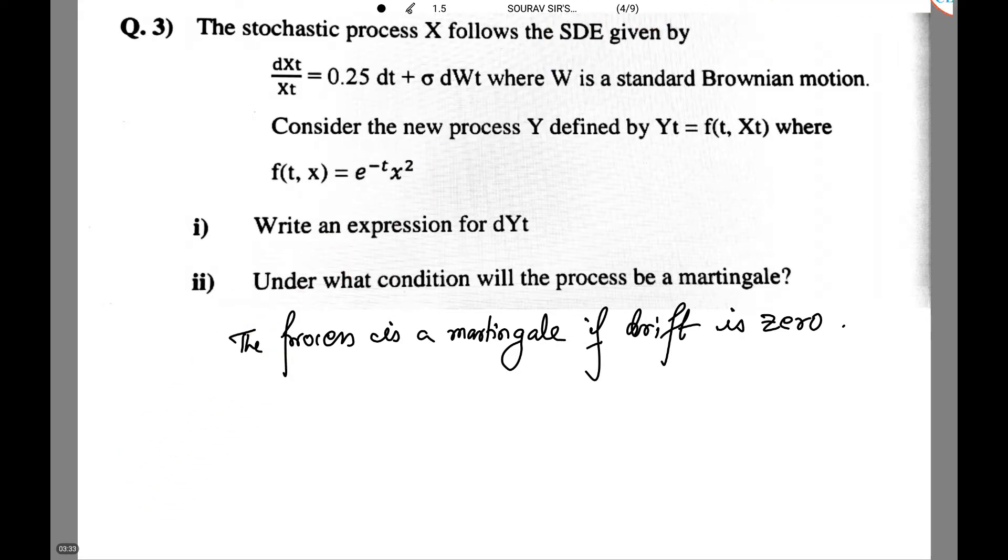Now the process is a martingale if the drift is 0. This means sigma squared minus 0.5 equals 0. That is sigma squared equals 0.5. And hence this is the condition that is required in this question.